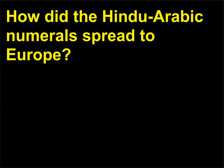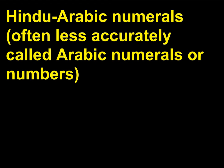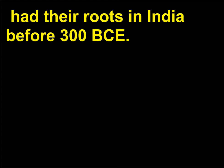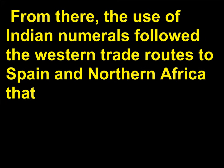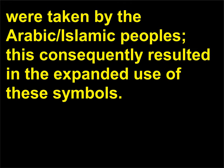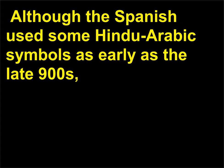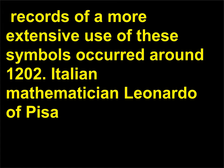How did the Hindu-Arabic numerals spread to Europe? Hindu-Arabic numerals, often less accurately called Arabic numerals or numbers, had their roots in India before 300 BCE. From there, the use of Indian numerals followed the Western trade routes to Spain and Northern Africa taken by the Arabic-Islamic peoples, which consequently resulted in the expanded use of these symbols. It took several more centuries to spread the idea to Europe, although the Spanish used some Hindu-Arabic symbols as early as the late 900s.